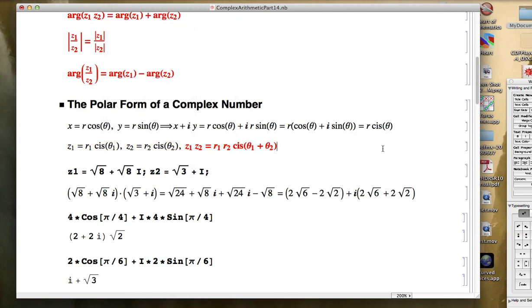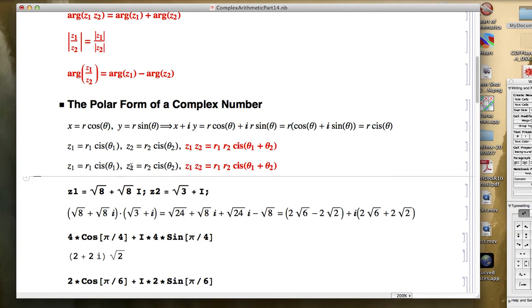As far as complex number division, as long as z2 is not 0, so you're not dividing by 0, and that will imply r2 is not 0,